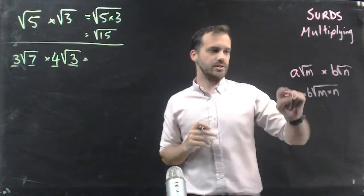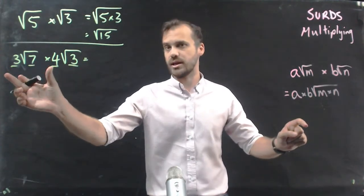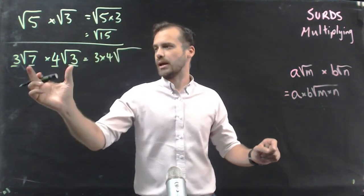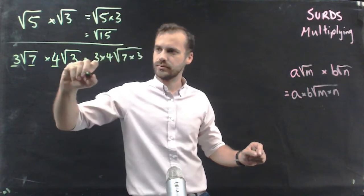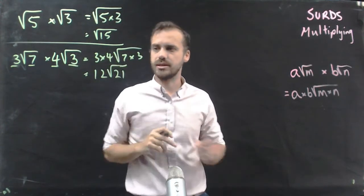Now to solve this, you do a times b, so the things on the outside we multiply together. And the things on the inside we multiply together. 12 root 21.